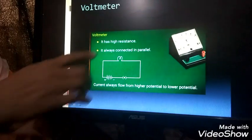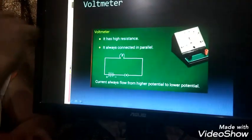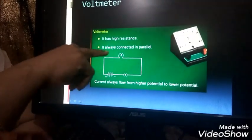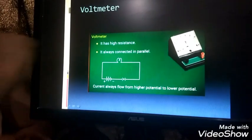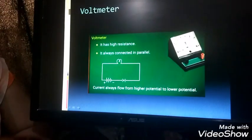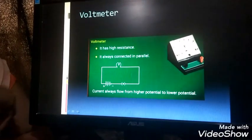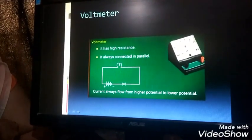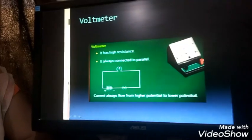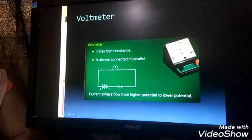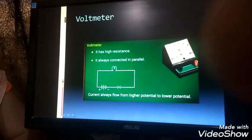This voltmeter has got high resistance and it is always connected in parallel. This is the instrument for the voltmeter. The current always flows from the higher potential to the lower potential. Thank you students, have a nice day.